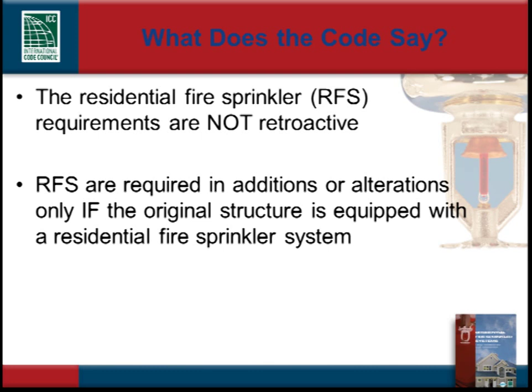The requirement for residential fire sprinklers is not a retroactive requirement — it is written to apply to new construction. The only time the residential fire sprinkler requirement would be applied to an existing dwelling is when the owner decides to construct an addition or remodel and the dwelling is already equipped with a residential fire sprinkler system. In those cases, the system would need to be extended or modified where necessary, based on the extent of the new construction.